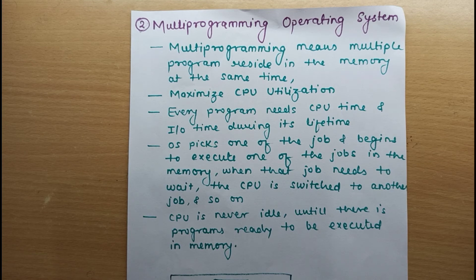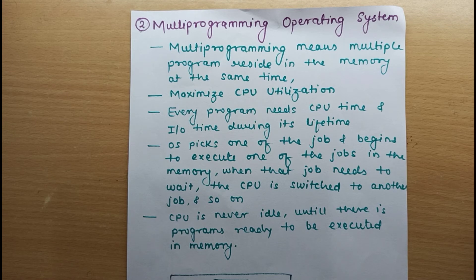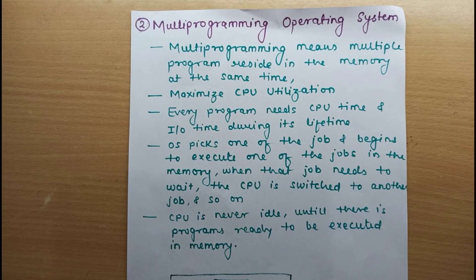To overcome that problem, the multiprogramming concept was introduced — let's have multiple programs in memory at the same time. All the programs which are ready to be executed are loaded into the main memory. There is still only one CPU, so that CPU will pick one job from the main memory and execute it. Once that job goes for an IO operation, the CPU will pick the next job from the memory.